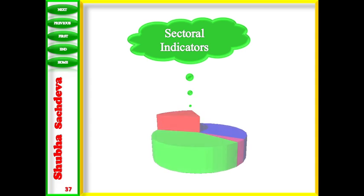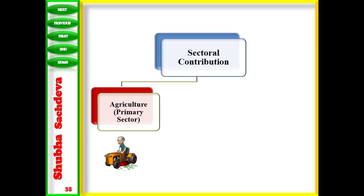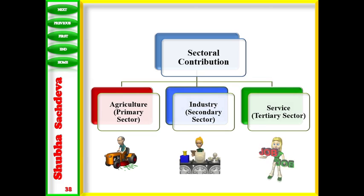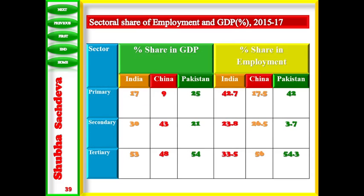Here we look at sectoral indicators. We know that three sectors are there: agriculture sector, which is also called the primary sector, industry sector, and service sector. If we look at this table, we can easily recognise the sectoral share of employment and GDP in 2015-17 — how much the share of GDP is and how much the share of employment, that is, the distribution of workforce in the country.